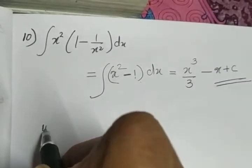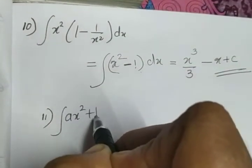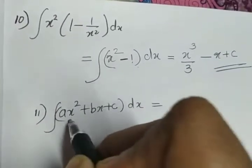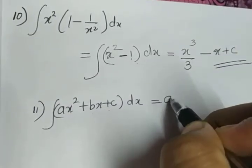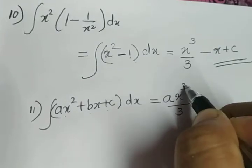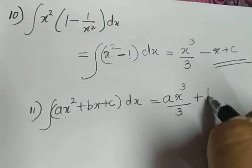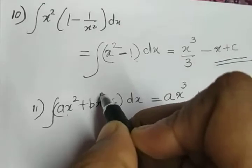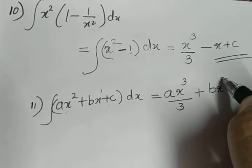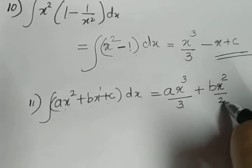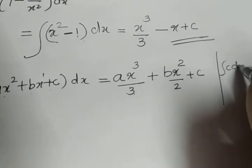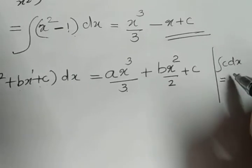Next: integral of (ax² + bx + c) dx. We integrate term by term. There are three terms. In the first term, a is a constant; integral of x² is x³/3, using the formula x^(2+1)/(2+1). In the second term, b is a constant; x means x¹, so applying the formula we get x^(1+1)/2, which is x²/2.